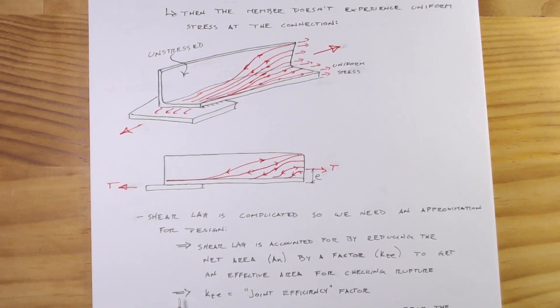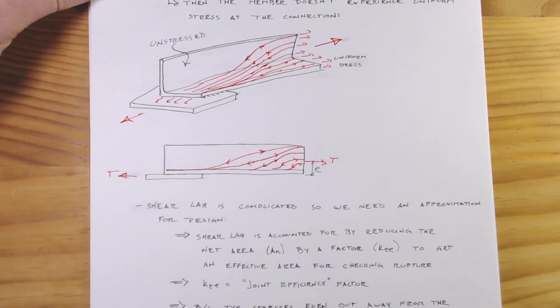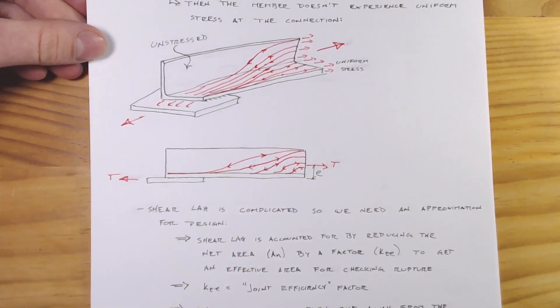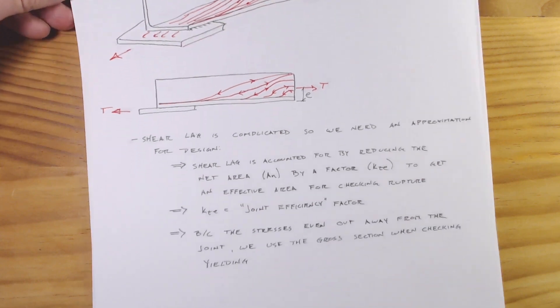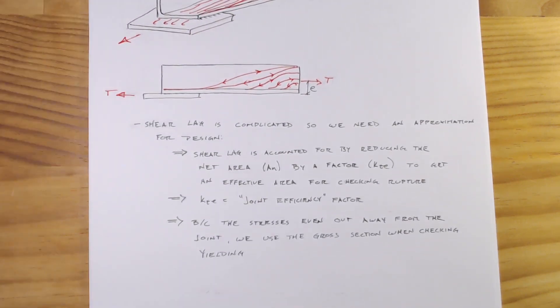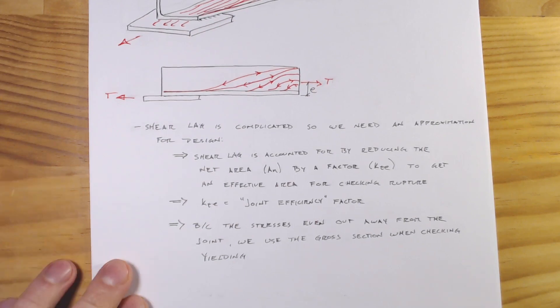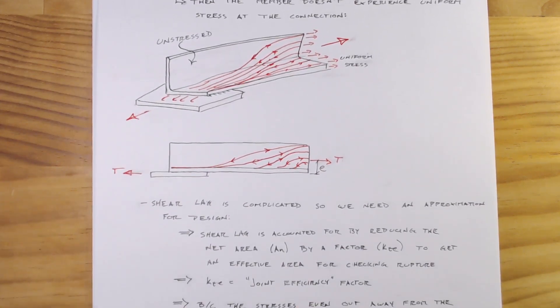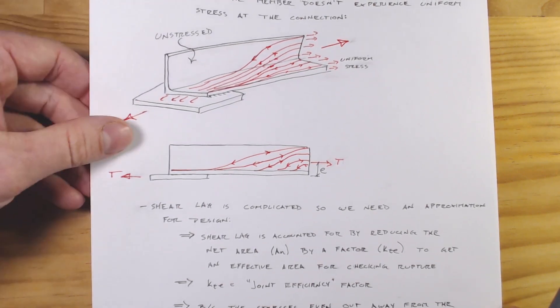What you'll note in this description is we're only doing this when we're looking at rupture of the net area, and that's because as we get further and further away from the connection our stress evens out to a more uniform distribution. That means we can actually just use the gross section of that element. That's an overview as to what shear lag is and why we use it.